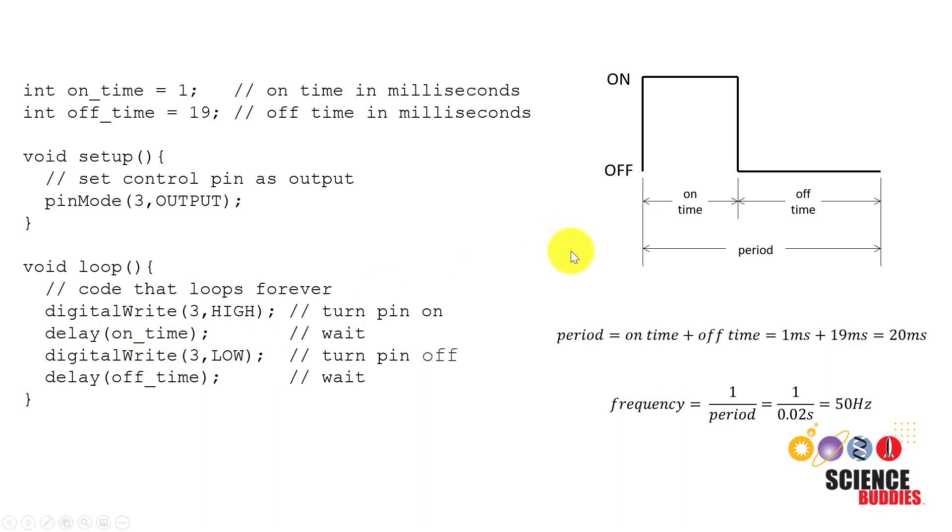The math works out nicely in this case because the period, which is the on time plus the off time, is 1 plus 19, which is 20 milliseconds. And the frequency, which is 1 divided by the period—make sure you remember to convert from milliseconds to seconds here—so 1 divided by 0.02 seconds is 50 Hertz. Now if you want to get technical, it does take some small amount of time for the code to go from the bottom of this loop back around to the top, which is going to add a little more time, so you would not get exactly a 50 Hertz signal. However, that amount of time is measured in nanoseconds, so we're not too worried about the amount of error we're going to get from that additional time in the code.